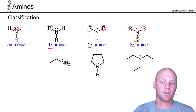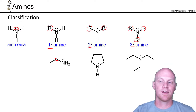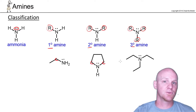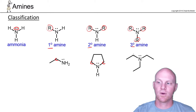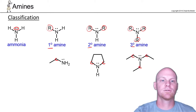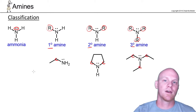Here we see an example of a primary amine — the nitrogen is only bonded to one carbon. Here a secondary amine, where the nitrogen is directly bonded to two carbons. And here a tertiary amine, with the nitrogen bonded to three carbons.